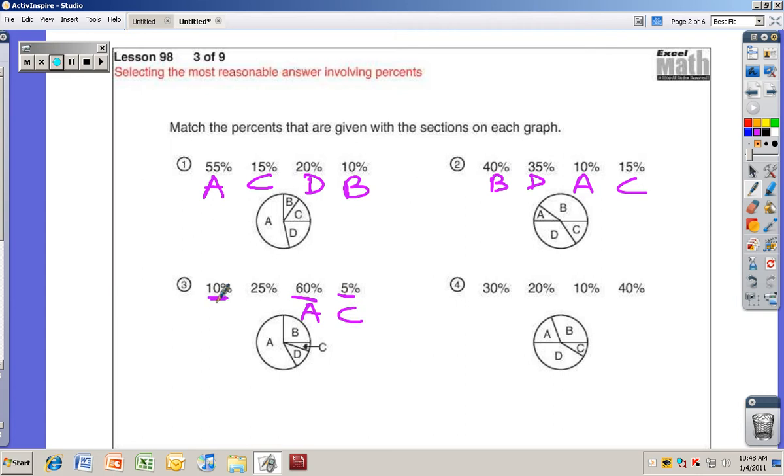A. Very good, A. Okay, the smallest. Let's go to the smallest one next. 5% would be what? C. Come on, everybody. 10%, the next biggest piece, would be what? D.